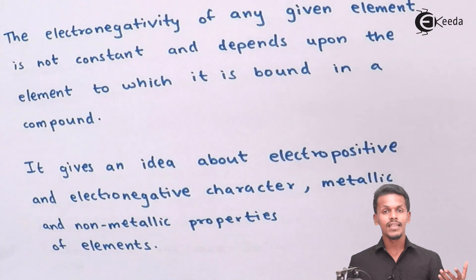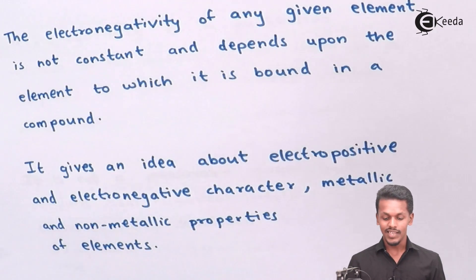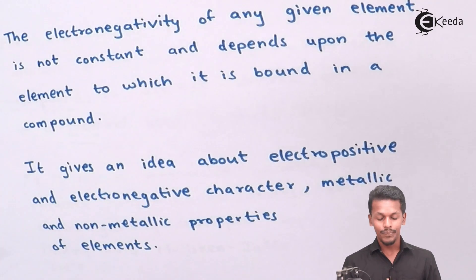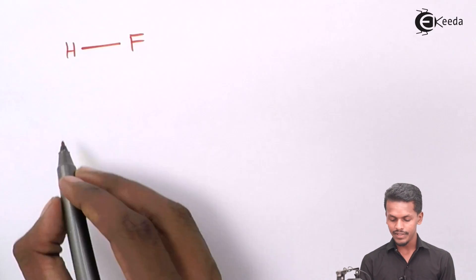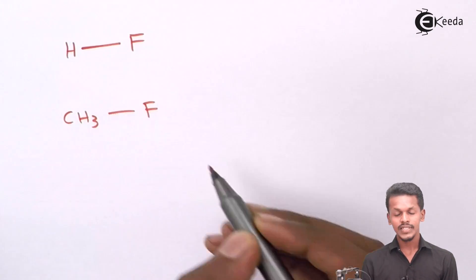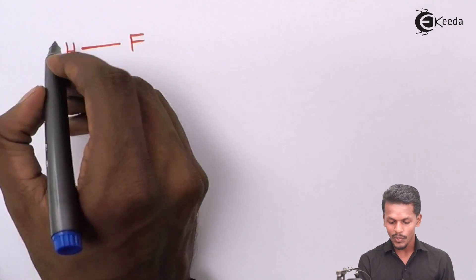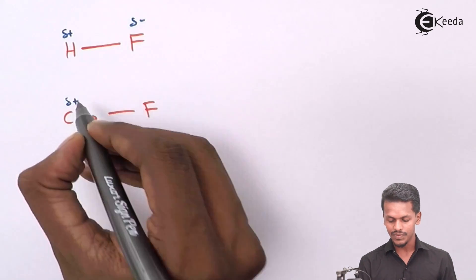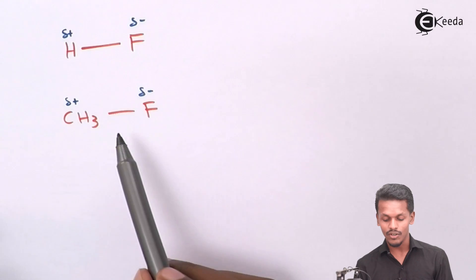The electronegativity of any given element is not constant and depends upon the element to which it is bound in a compound. For example, the electronegativity value of fluorine won't be constant. Consider hydrogen fluoride and methyl fluoride — in both cases the fluorine atom is common. In HF, hydrogen has a partially positive charge while fluorine has a partially negative charge. In methyl fluoride, the methyl group has a partially positive charge and fluorine has a partially negative charge. But the electronegativity of fluorine in HF would be different from that in methyl fluoride.